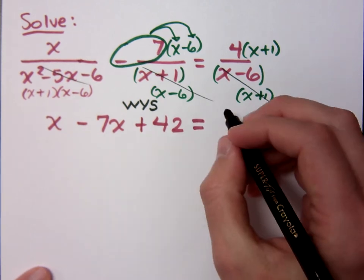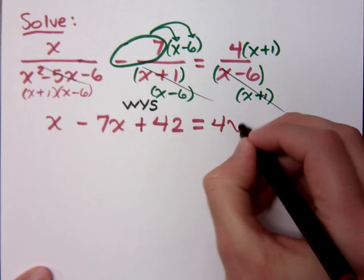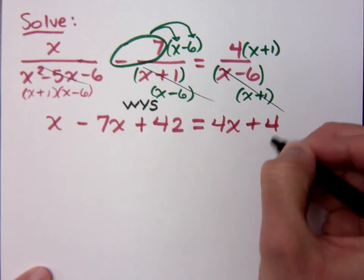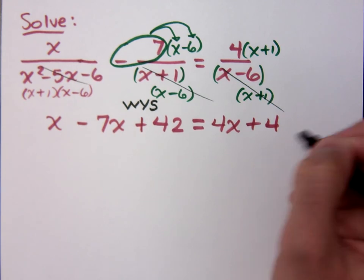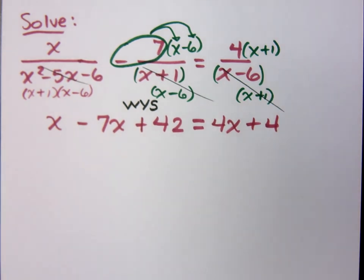What do you have on the right side? 4X plus 4, not 4X plus 1. Make sure you do distribute correctly. What kind of equation do I have here? Is this quadratic or linear? Linear. What tells you it's linear? All you have is X to the first power. Since this is linear, you use linear methods to solve this.